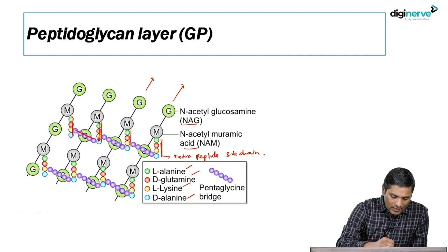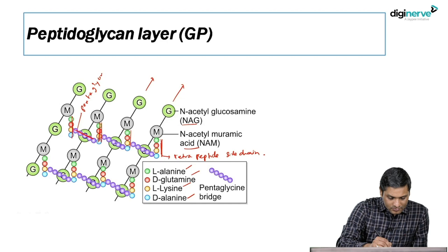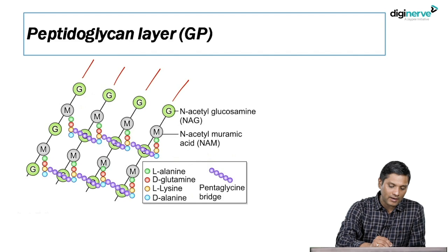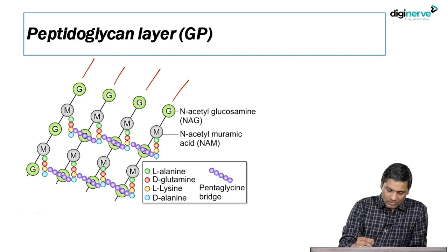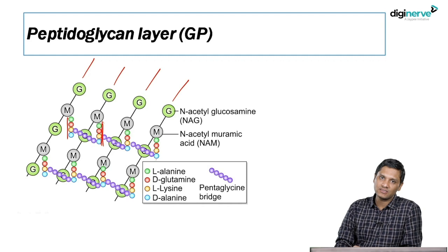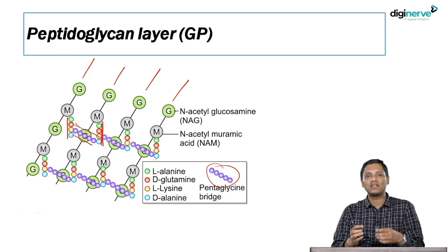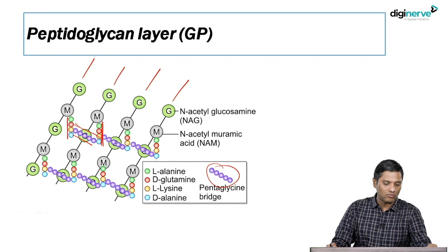The adjacent tetrapeptide side chains are further connected to each other by a pentaglycine bridge. So to repeat: alternate layers of mucopeptide are connected to each other by tetrapeptide side chains, and both tetrapeptide side chains are further linked to each other by a pentaglycine bridge. That is how the peptidoglycan layer is interlinked, and this gives rigidity to the cell wall.